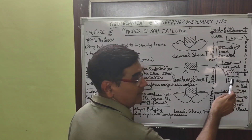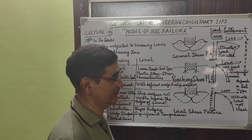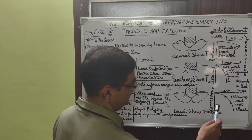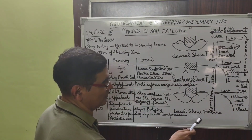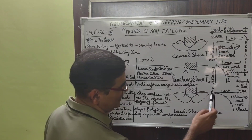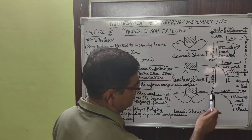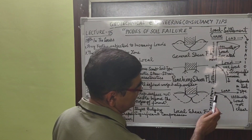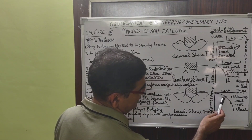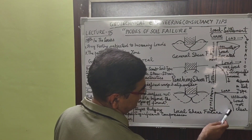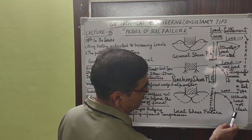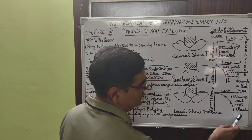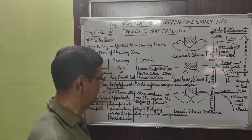In the third case of local shear failure, as we increase the load the settlement increases and keeps on moving — the ultimate load is not at all clear.